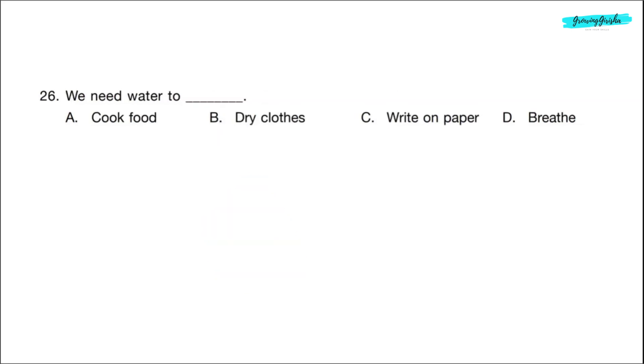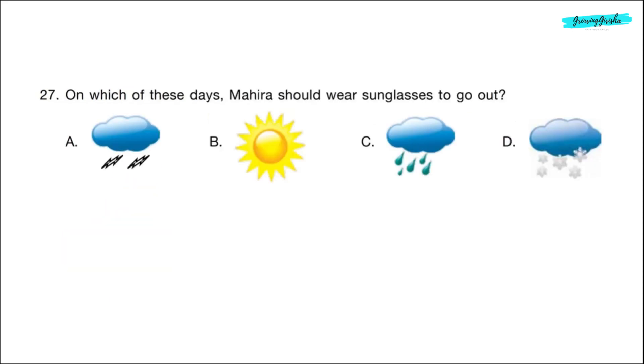Question 25. The days become short and the nights are longer in dash. Correct answer is option B, winter. Question 26. We need water to dash. Correct answer is option A. Cook food. Question 27. On which of these days Mahira should wear sunglasses to go out? Correct answer is option B. When it's sunny.